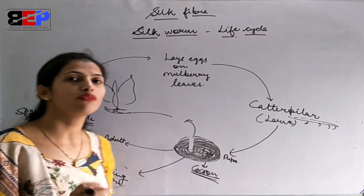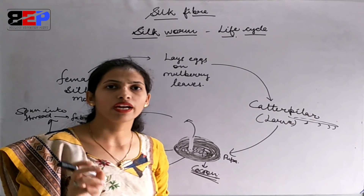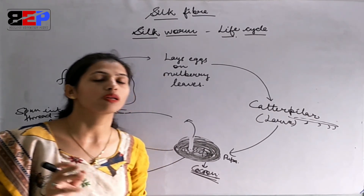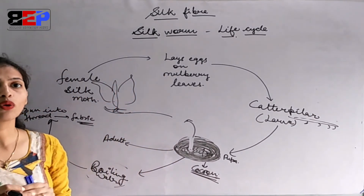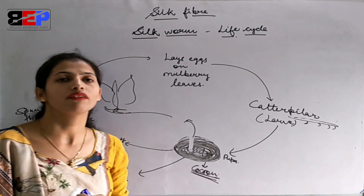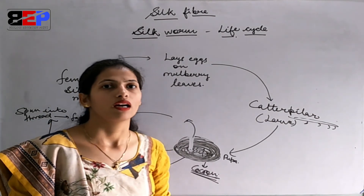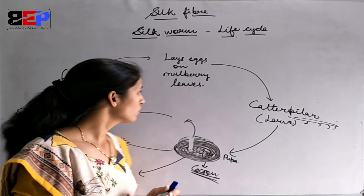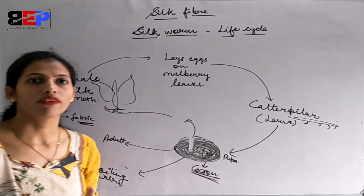As you can see, the fabric is very shiny, smooth, and light in weight. The fabric is very expensive because its look is very good. It is light in weight and it is very shiny. That's all about silk fibers.